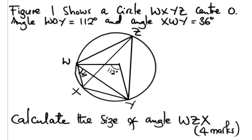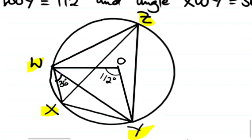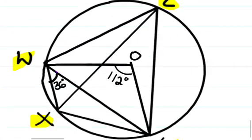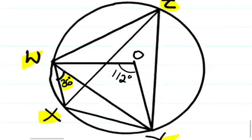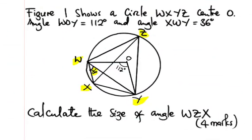In this video I want to show how we can solve this kind of problem. It's about circle geometry. The question is: figure one shows a circle WXYZ with center O. The angle WOY at the center is given, and the angle XWY is 36 degrees. We need to find the size of angle WZX.